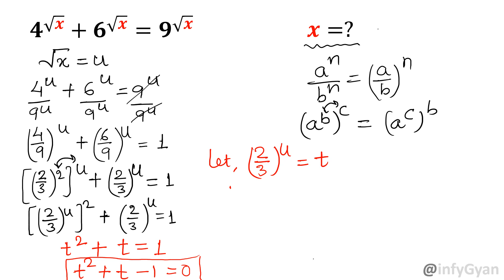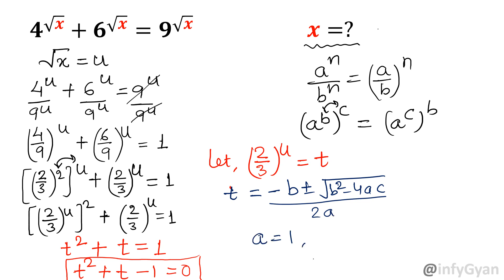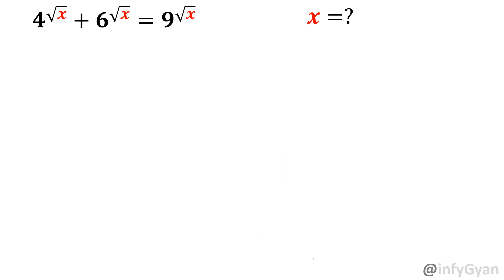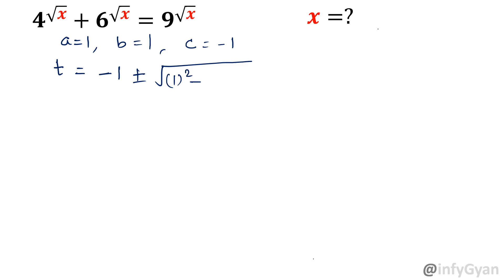As per our equation, let me write the formula first. t equals minus b plus or minus square root of b squared minus 4ac, divided by 2a. Here a is 1, b is 1, c is negative 1. So t will be minus 1 plus or minus square root of 1 plus 4, divided by 2, which gives minus 1 plus or minus square root 5 over 2.